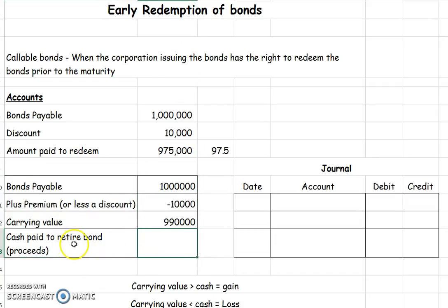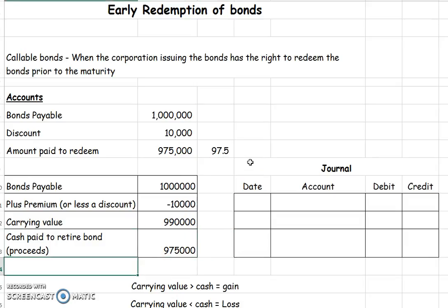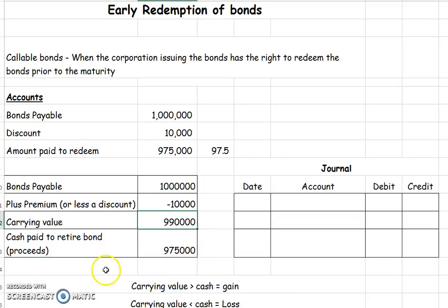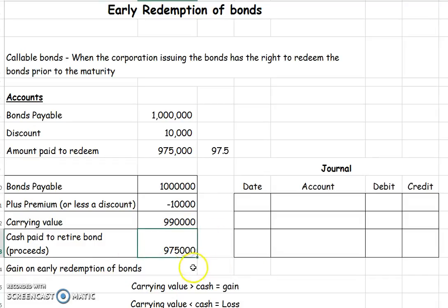Next, we're going to compare our carrying value to the cash paid. If our carrying value is greater, then we're going to have a gain on early redemption of bonds. And $990,000 is larger than $975,000, so we do in fact have a gain here of the difference, which is $15,000.